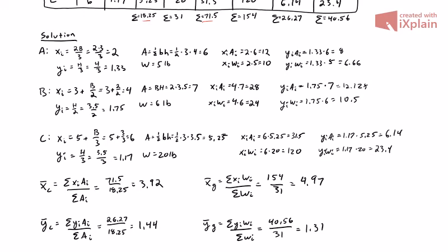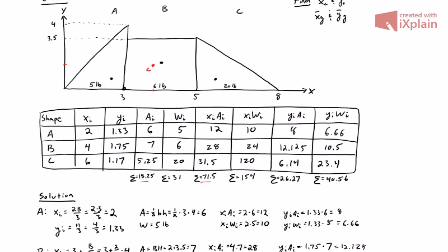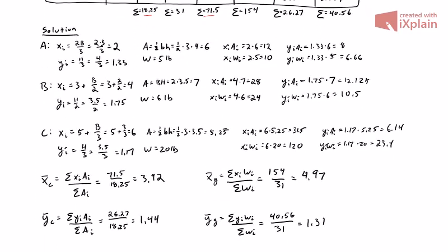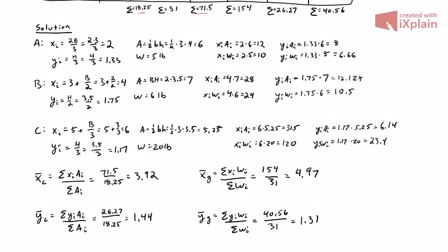The last step is always to plot everything to make sure it makes sense. Plotting the centroid in red at (3.92, 1.44) — that lands right here on the figure. Plotting the center of gravity in blue at (4.97, 1.31). Both points fall on the object, which checks out. It also makes sense that the center of gravity is pulled further to the right toward that 20-pound triangle. All numbers for this problem are on the slide so you can follow along.